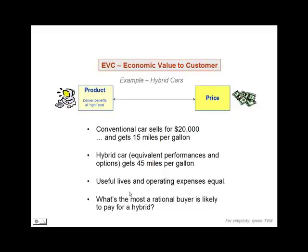For simplicity, we'll assume that both cars have equivalent useful lives and that all of their operating expenses — stuff like repairs and maintenance and oil changes — are equal. We understand about the time value of money, but we're going to treat this as a nominal problem and not worry about discounting all the factors back. So the question is: what would a rational buyer be likely to pay for a hybrid car, given that the comparable conventional car sells for $20,000 and gets 15 miles per gallon, and the hybrid gets 45 miles per gallon?